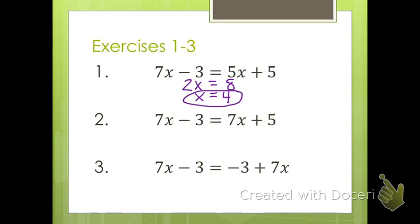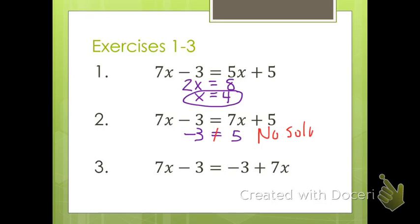Let's look at number two. When we went through the same steps of trying to solve this, we got negative 3 on the left-hand side equaling negative 5, which we know is not true. Negative 3 does not equal negative 5, so we would say that this equation has no solution. No matter what I put in for x in this equation, there will never be an x that works for that.